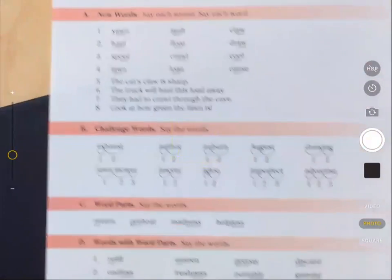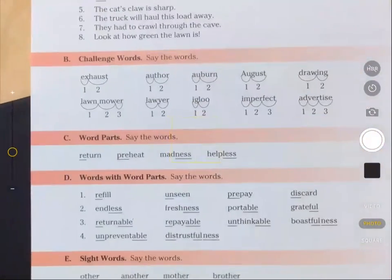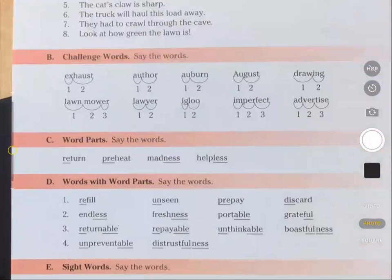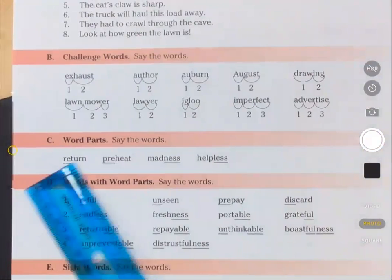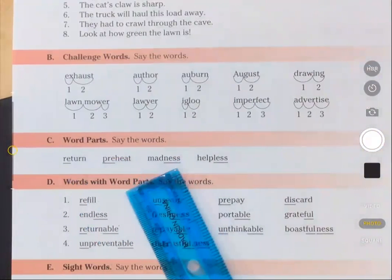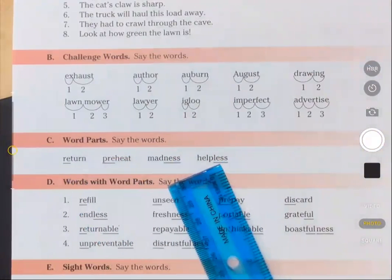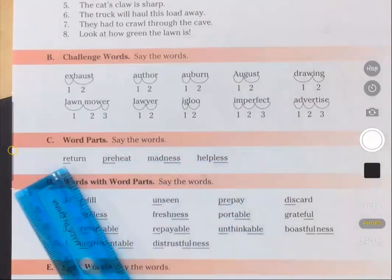Let us also review the word parts in words we will be reading this week. Please take a look at part C. Please look at the underlined letters in each word. Here we go.